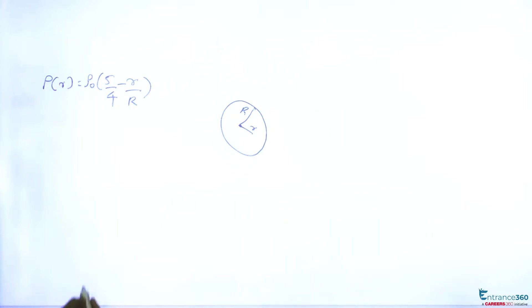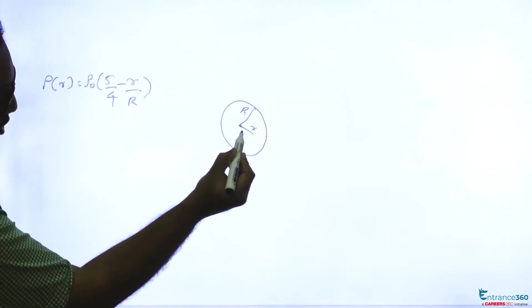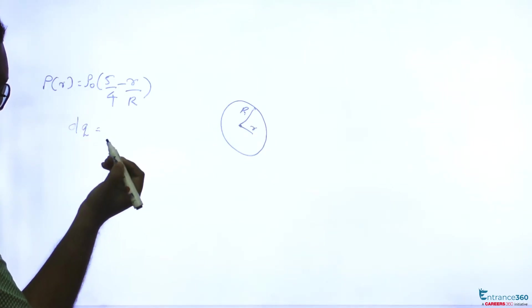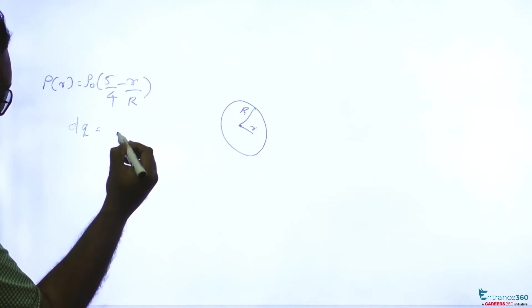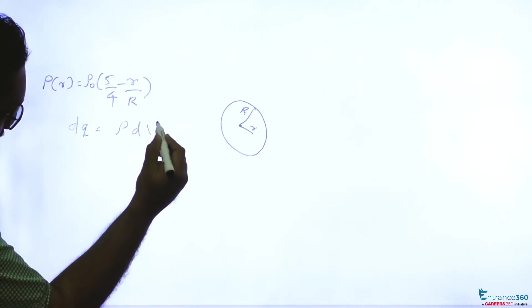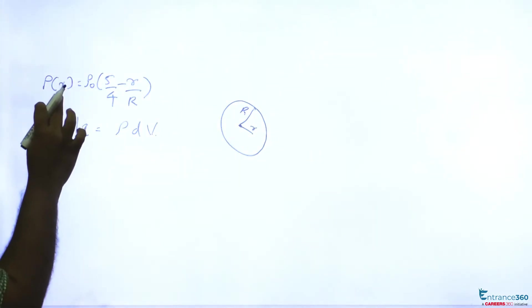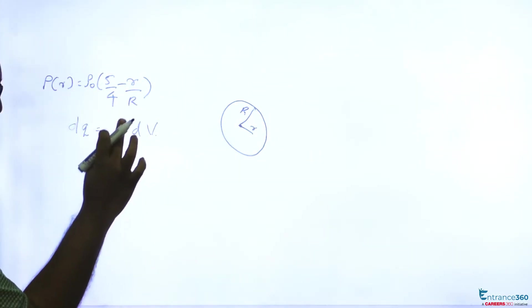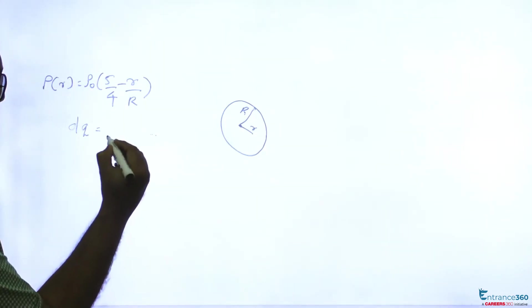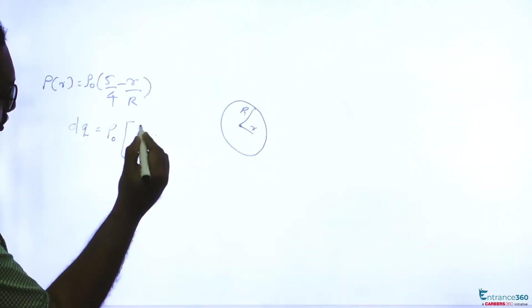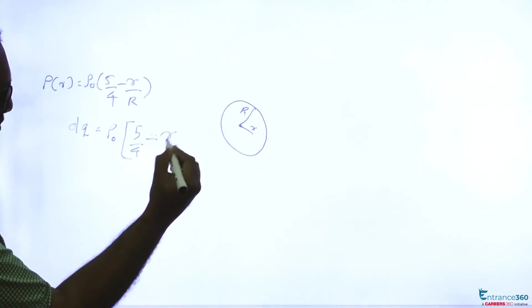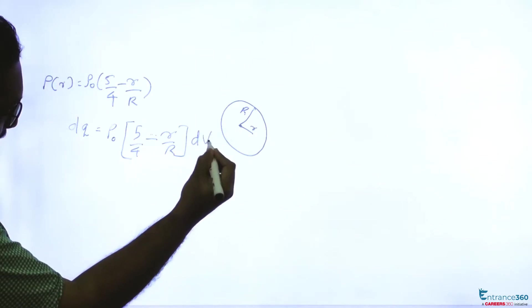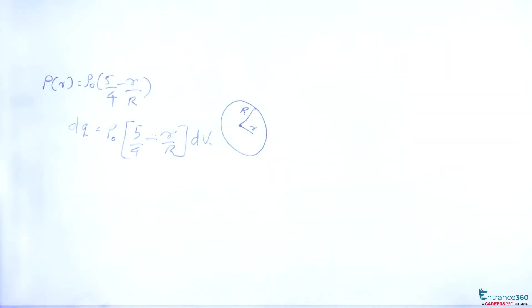Let's say for a small part, charge dq, which will be ρ dV where ρ is changing as given. So you can write instead of ρ, ρ₀(5/4 - r/R)dV. This is small charge dq.